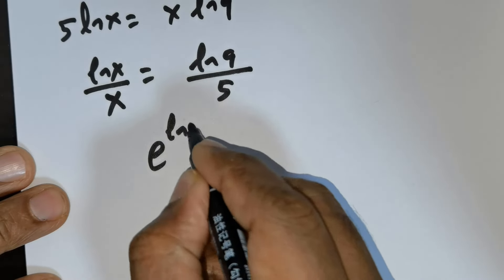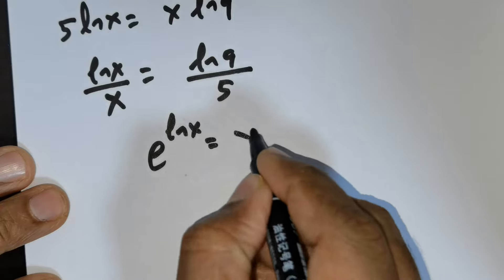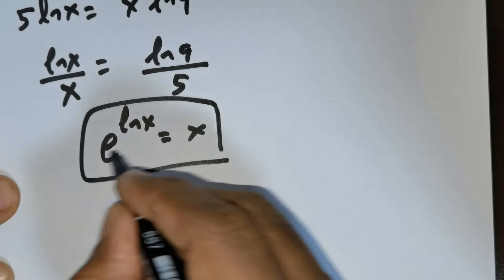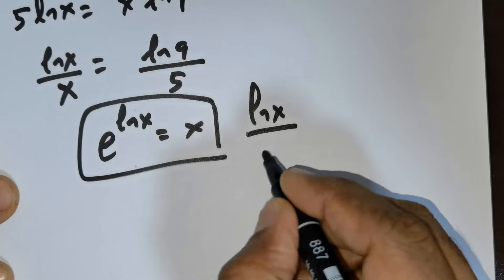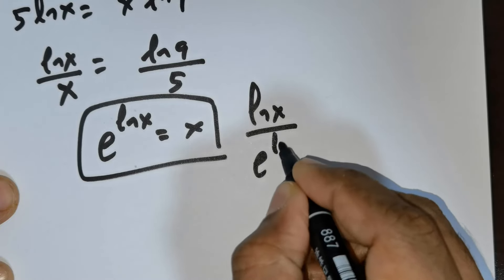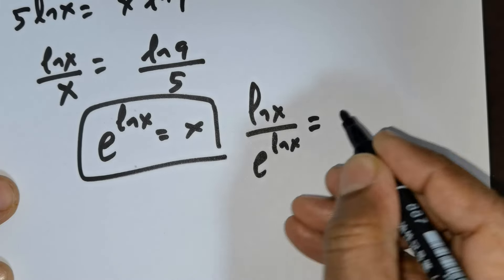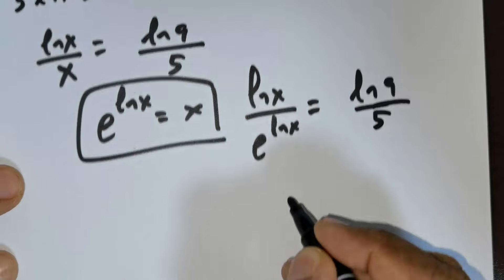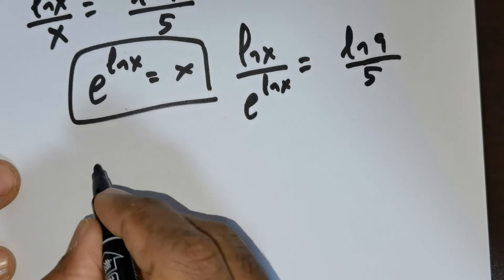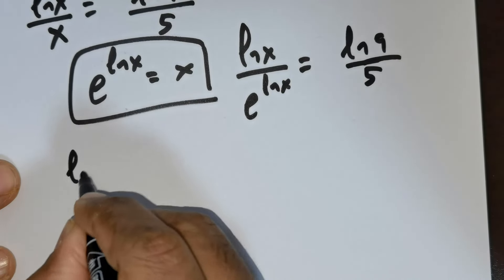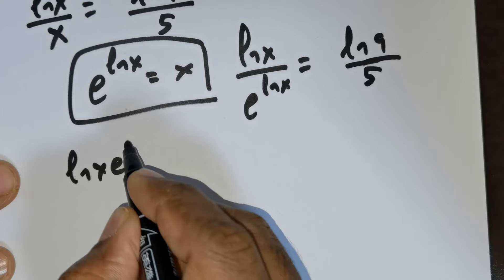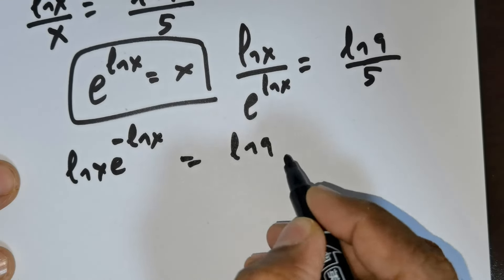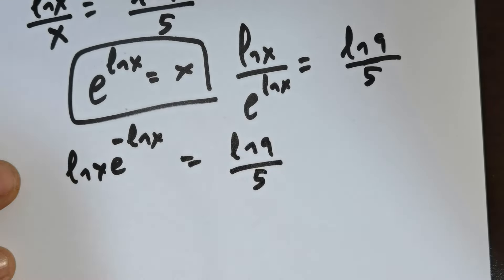Now there is a formula: e raised to the power of ln x is equal to x. So in place of x I will substitute this. So you have ln x divided by e raised to the power of ln x is equal to ln 9 divided by 5. You can push this up, so this will give you ln x times e raised to the power of negative ln x is equal to ln 9 divided by 5.